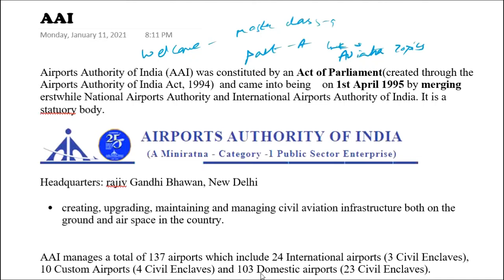Welcome friends. Today we'll be covering the topic related to aviation, which is AAI - Airports Authority of India. AAI was constituted by an Act of Parliament. The name of the Act is the Airports Authority of India Act, 1994.